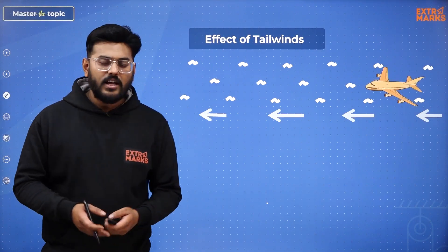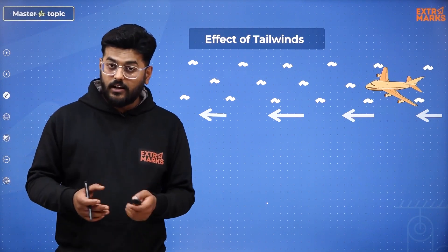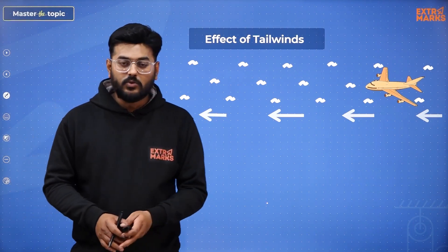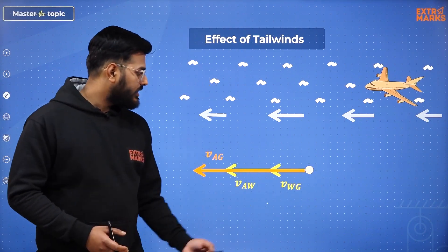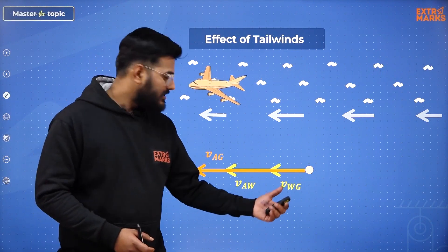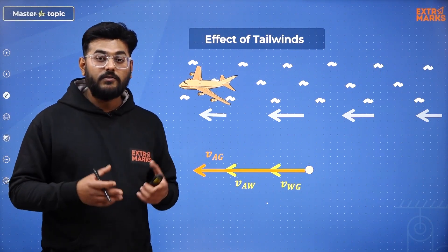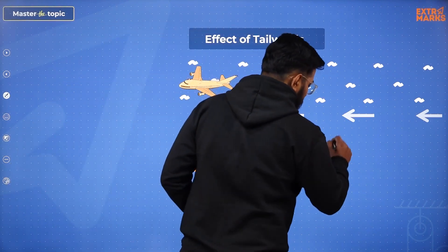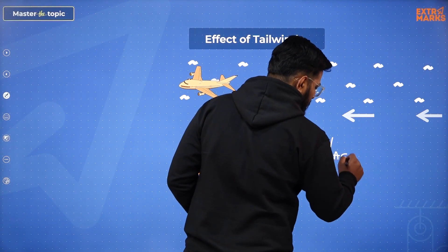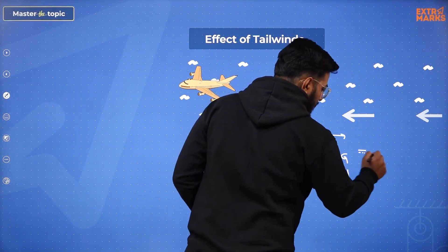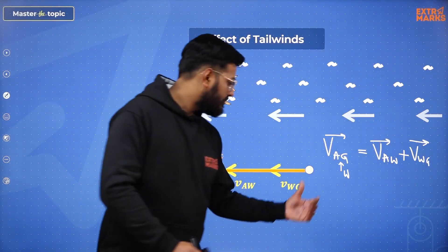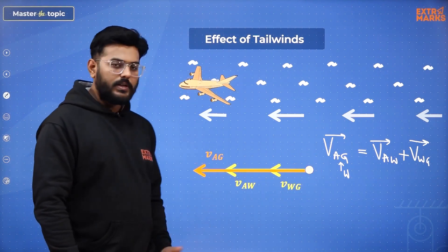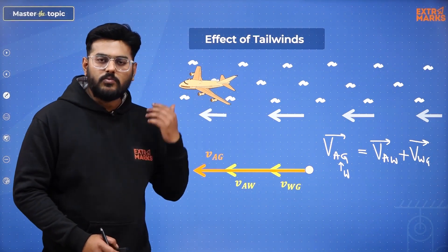Now let's look at the second case: the effect of tailwinds on an aircraft. As the name suggests, the winds are blowing directed towards the tail of the aircraft. The aircraft is steering in the forward direction and even the winds are in the forward direction. As a result, the effective velocity of the aircraft increases. We are still in search of velocity of aircraft with respect to ground — we introduce the wind frame, and the result turns out to be greater effective speed. The flight will have a very smooth flow in air.